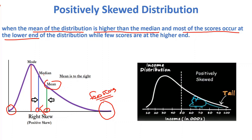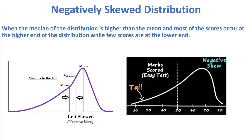Let's understand this with an example — here we have an income distribution. You can see there are low scores at the lower end and very few scores at the higher end. This means most people in the company have a lower salary, concentrated in this band, while very few people lie in the higher salary band. This is called a positively skewed distribution.